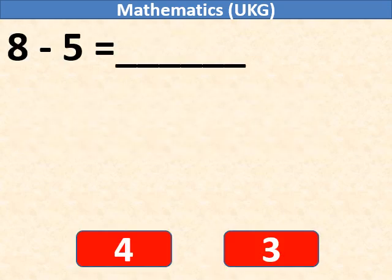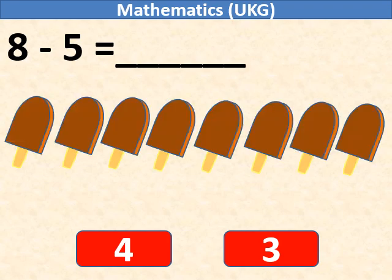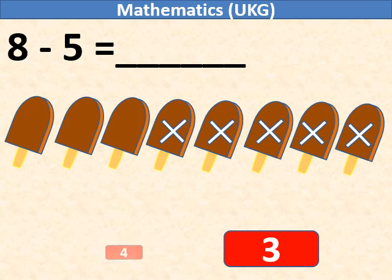8 minus 5 equals what? We have 8 ice creams from which we will delete, cancel or subtract 5 ice creams. So the remaining ice creams are 3.